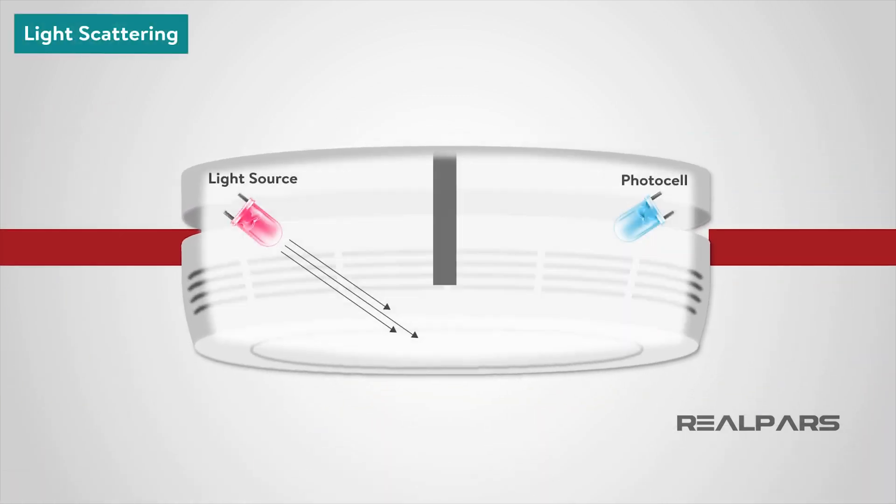The light scattering smoke detector operates on the Tyndall effect. A photocell and light source are separated from each other by a darkened chamber, such that the light source does not fall on the photocell.